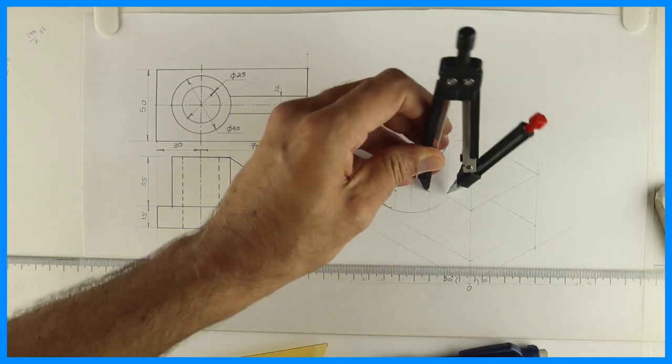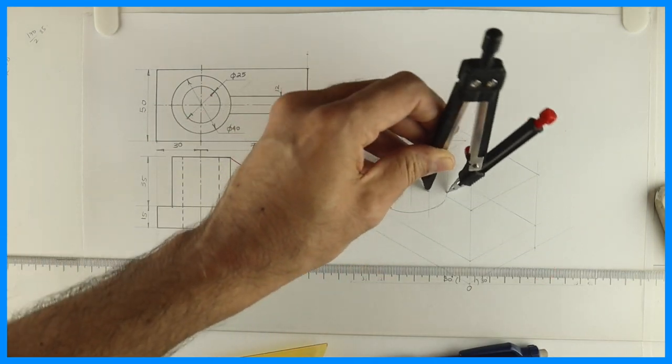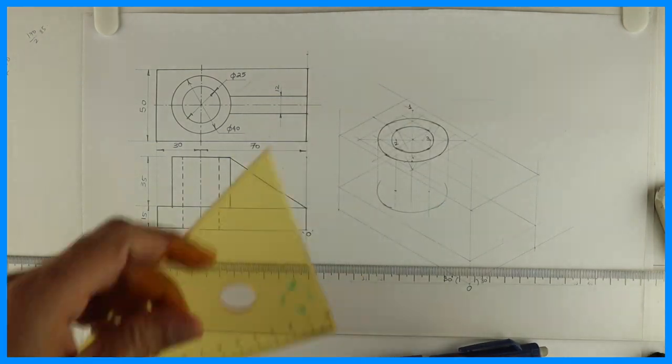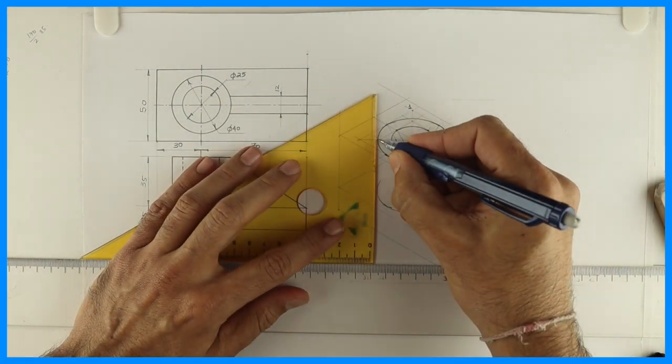So when you are drawing it, you draw it light. Because we don't know how much we can see. So draw this tangent.